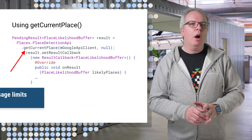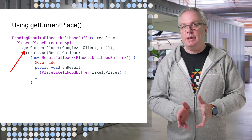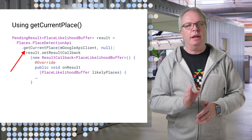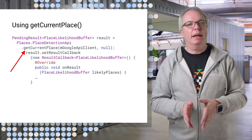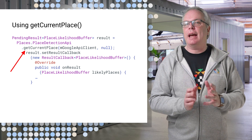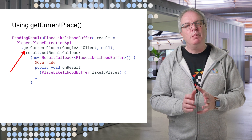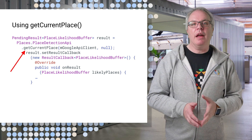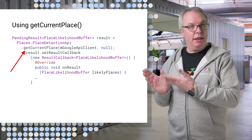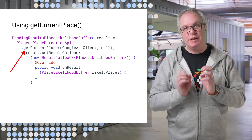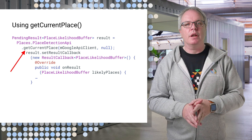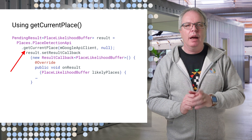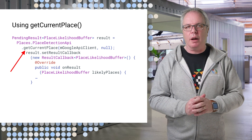When building an experience like this one, instead of constantly polling the device location and calling the Places API to get place information, it's probably better to do it on demand. In this case, Alyssa told me to go to a specific place, so when I think I'm nearby I can ping her and she can tell me if I'm close enough or not.